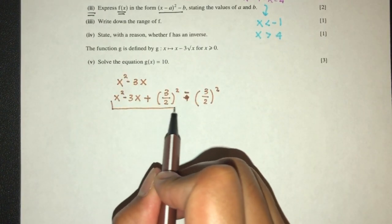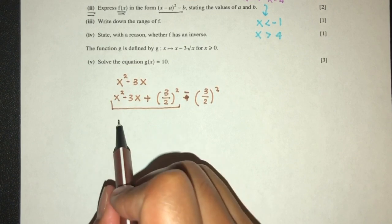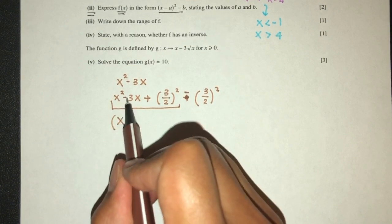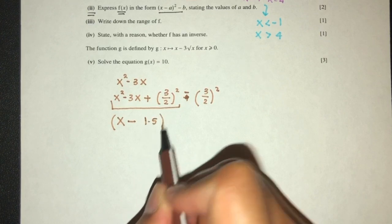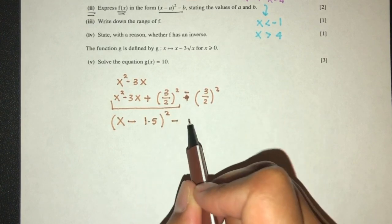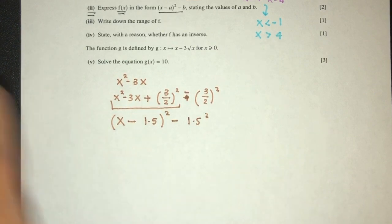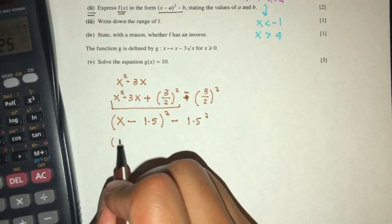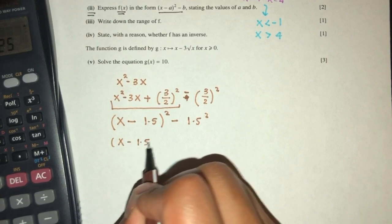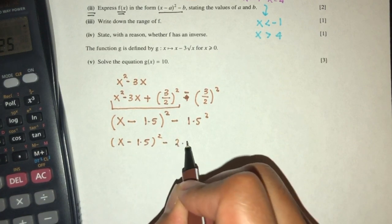Now for this one, this can be simplified. It will become, here we have x, that will be x. Here we have minus, that will be minus. Here we have 1.5. And here we have square. Here we have minus 1.5 square. What is 1.5 square? You will have 2.25. So here it is x minus 1.5 square minus 2.25.